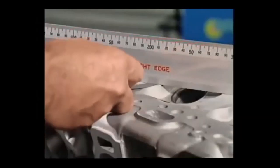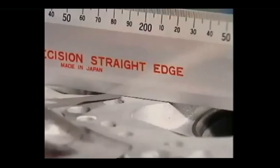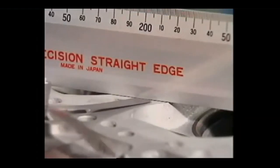To check whether something is square, parallel, flat, or true, a straight edge is used. It's placed against the surface that needs checking.